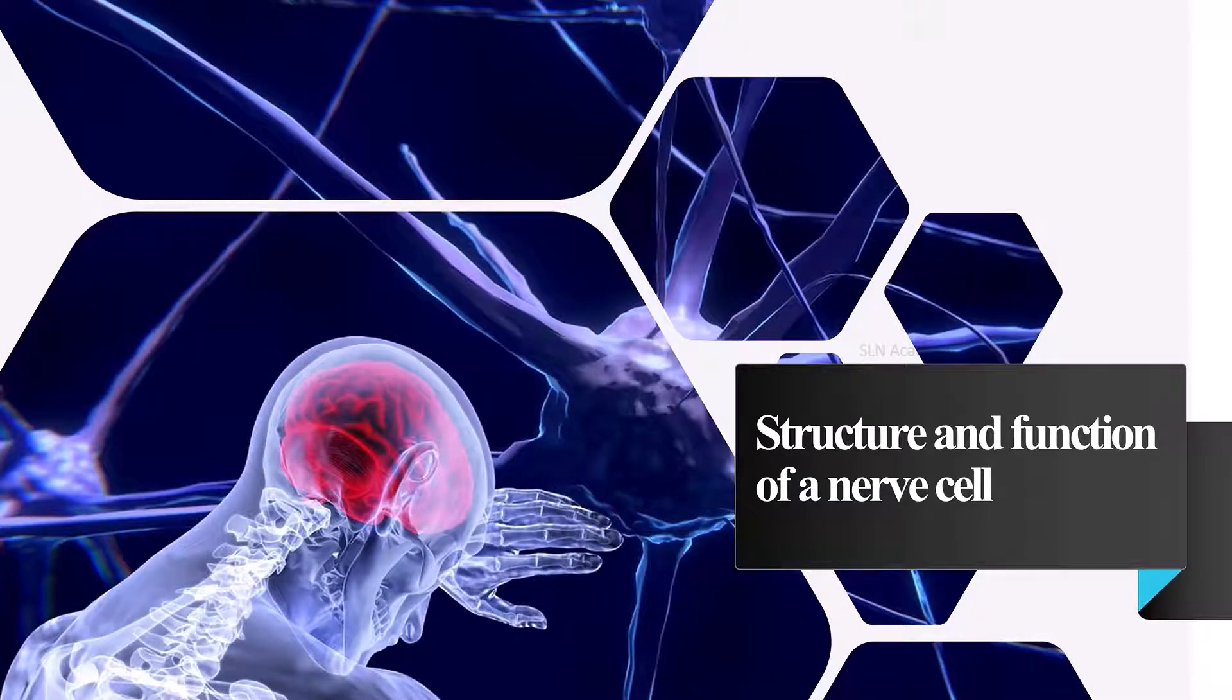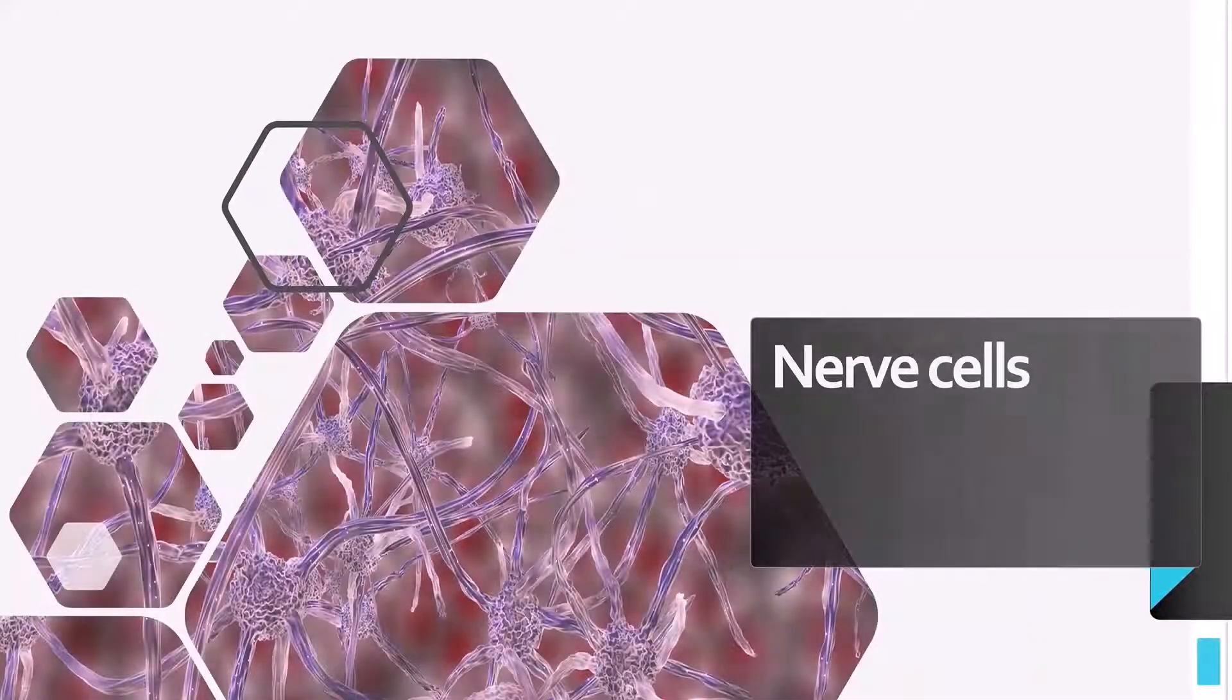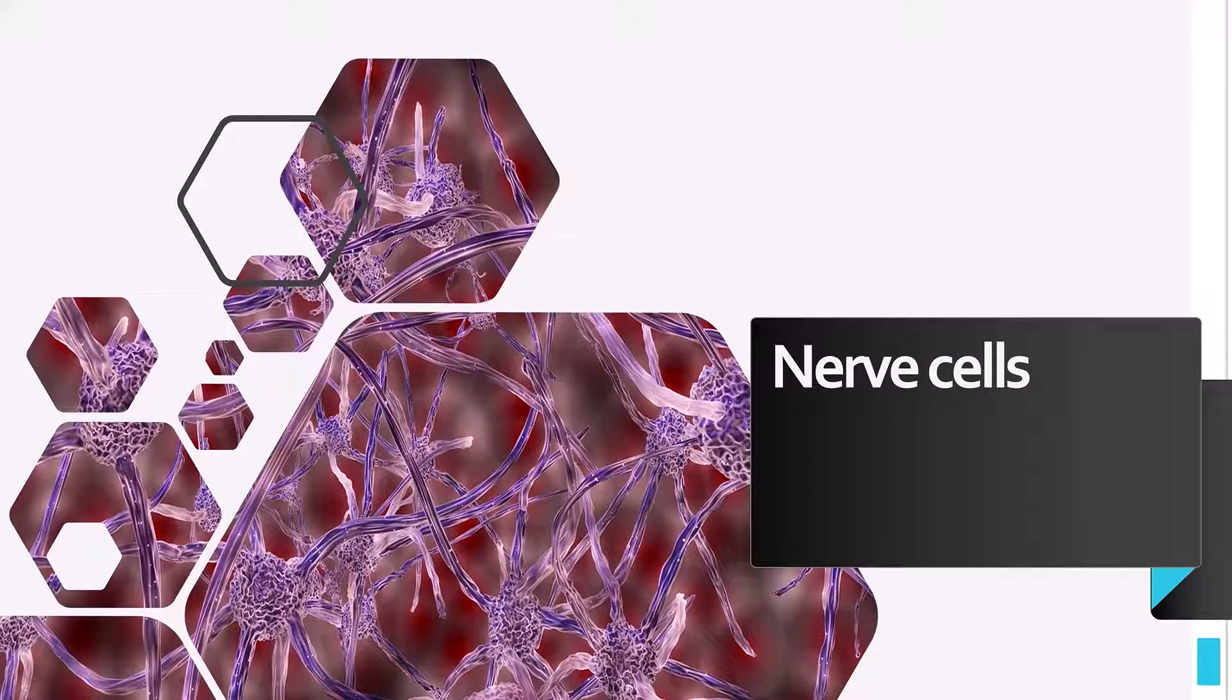Structure and function of nerve cell. The human body is made up of trillions of cells. Cells of the nervous system, which are also called nerve cells or neurons, are specialized in carrying messages. The human brain has approximately one hundred billion neurons.